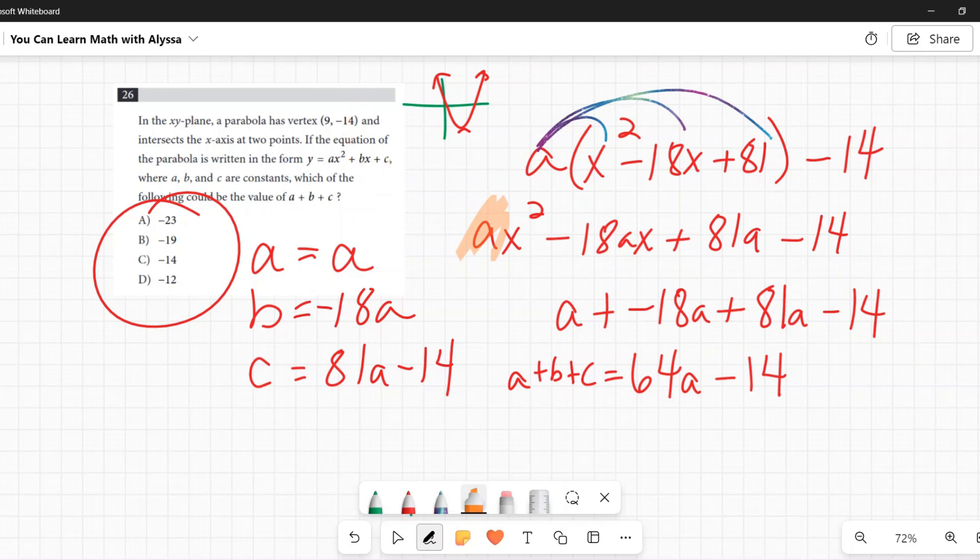Now we come back to this concept up here. This has to be a parabola that opens up because the vertex is below the x-axis, but it intersects the x-axis at two points. So a must be positive.